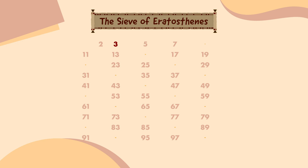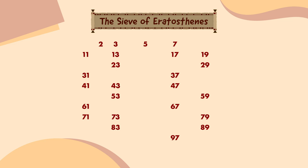And that's it! The prime numbers between 1 and 100 are: 2, 3, 5, 7, 11, 13, 17, 19, 23, 29, 31, 37, 41, 43, 47, 53, 59, 61, 67, 71, 73, 79, 83, 89, and 97.